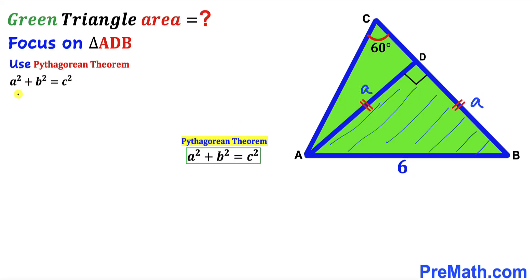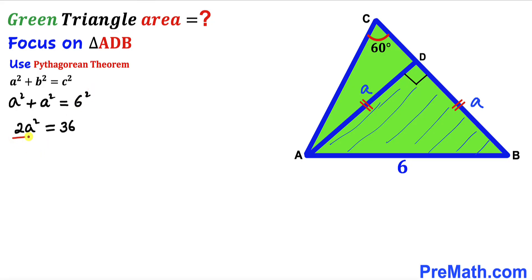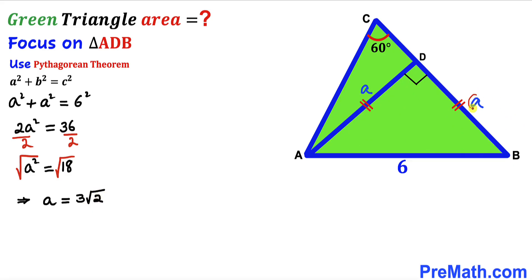Filling in the Pythagorean theorem: a² + a² = 6², which gives 2a² = 36. Dividing both sides by 2, a² = 18. Taking the square root of both sides, a = 3√2 units. So both AD and BD equal 3√2 units.